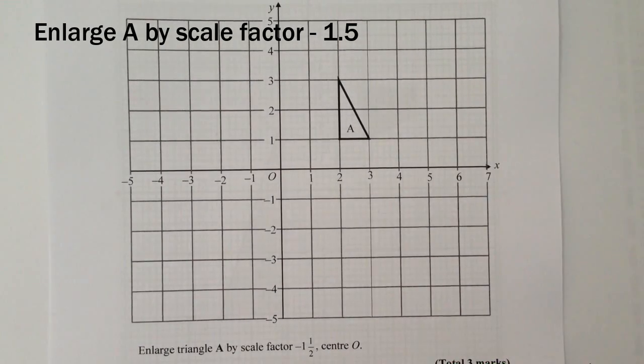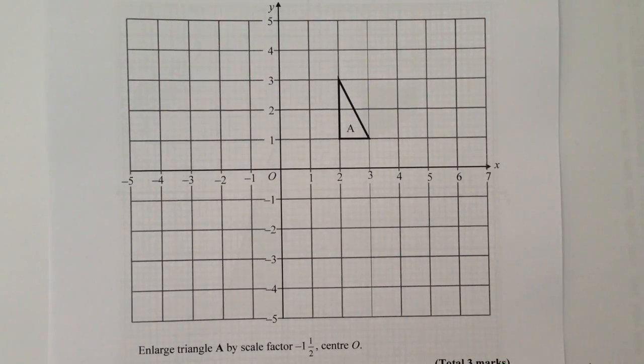Okay, so this is question two of the sheet on enlargement by negative scale factors. It asks us to enlarge triangle A by a scale factor of minus one and a half with a centre of zero.